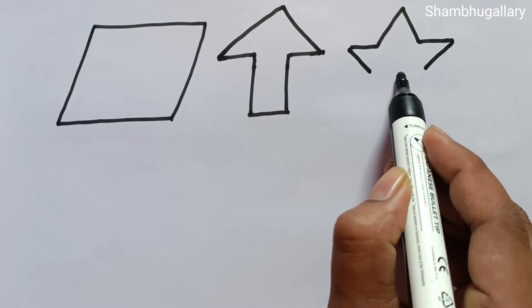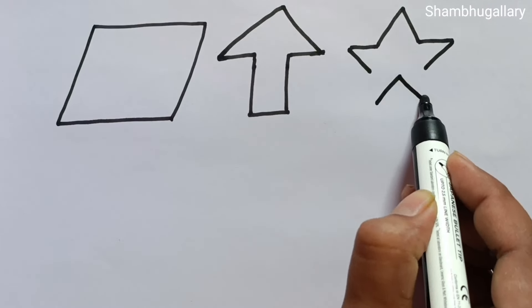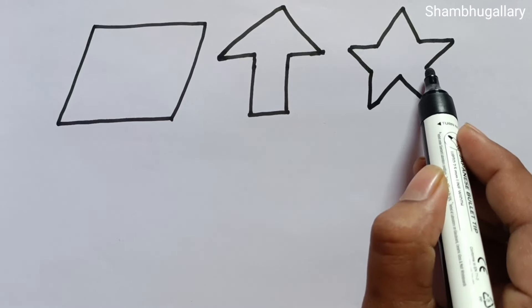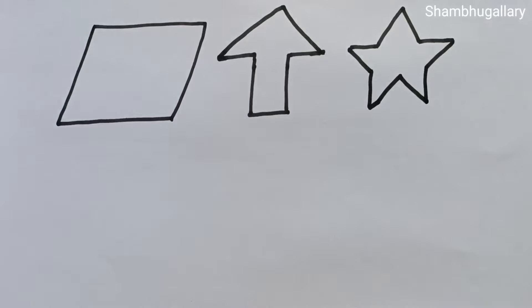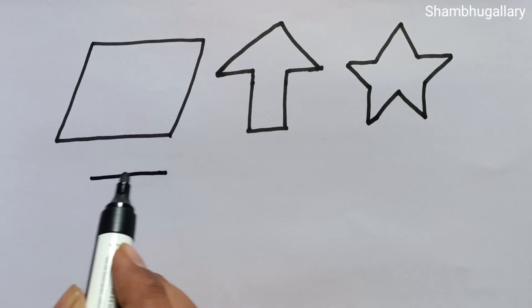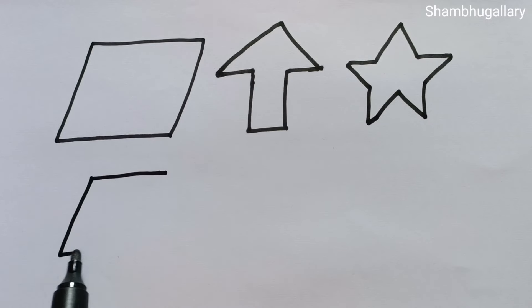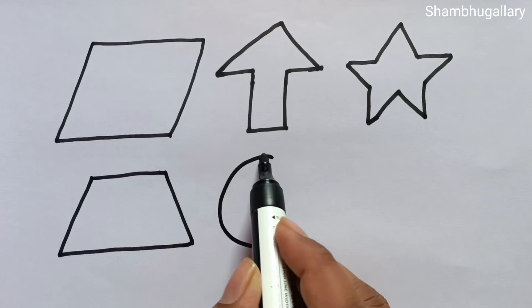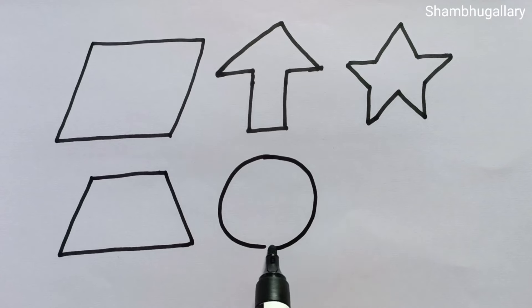Let's draw some 2D shapes. Parallelogram, arrow, star, trapezoid, circle.